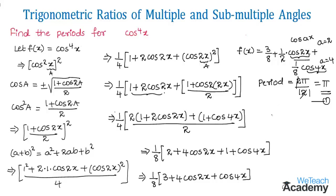The period of cos(ax) is given by 2π/|a|. For cos 4x, the period is 2π/4 = π/2. Let us call this equation 2.